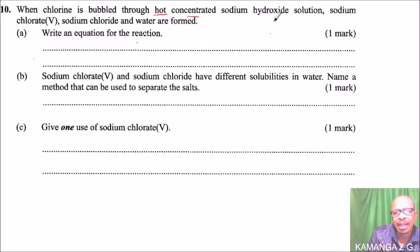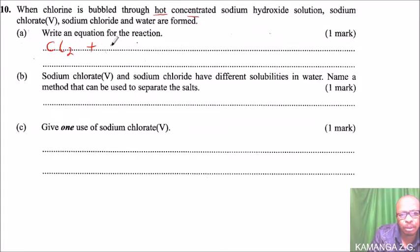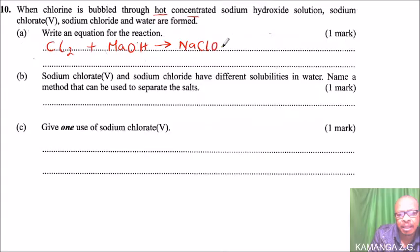When you pass chlorine through sodium hydroxide, these are the products you get. Chlorine gas (Cl2, gas) is passed through sodium hydroxide (NaOH, aqueous). The first product is sodium chlorate (NaClO3, aqueous) — don't forget to write the state symbols. Chlorine is gas and NaOH is aqueous.